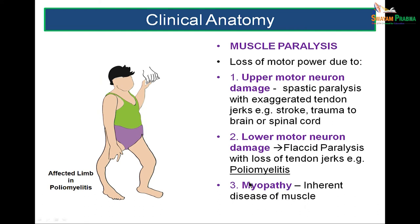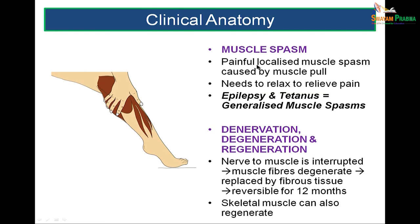Myopathy is an inherent disease of any muscle. Muscle spasms are cramp-like pains, localized spasms in the muscle that need relaxation to relieve pain. Epilepsy and tetanus are also muscle spasms but more generalized, involving more muscle groups of the body. Denervation and degeneration: when a nerve to a muscle is severed or interrupted, the muscle fiber degenerates and gets replaced by fibrous tissue and scar formation. Regeneration can occur if nerve supply is restored within 12 months; beyond that, muscle fiber totally degenerates and is irreversible.